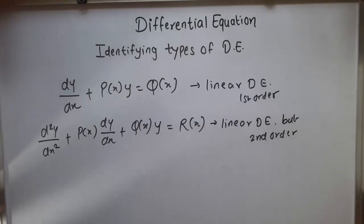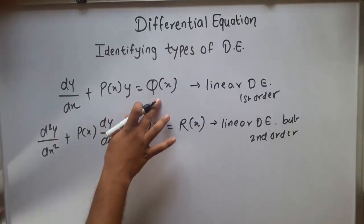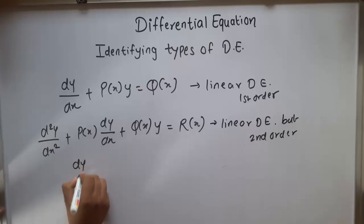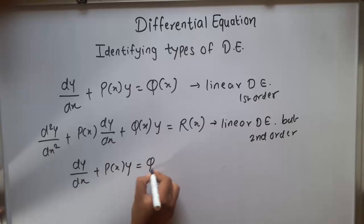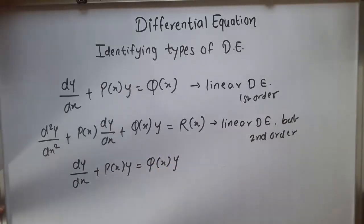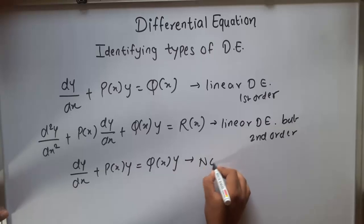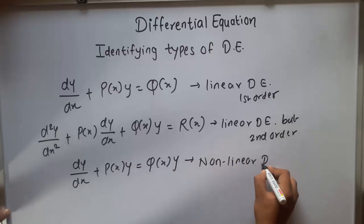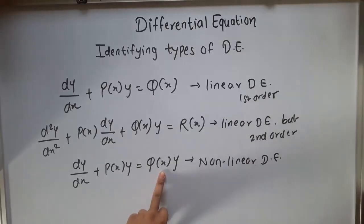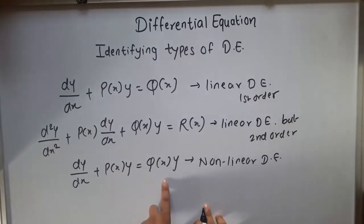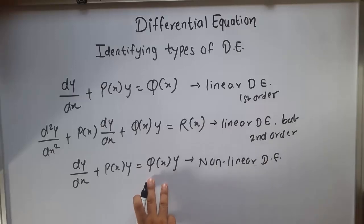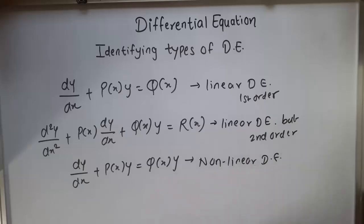If we multiply by a power of y, that forms dy/dx plus p(x)y equal to q(x)y^n. This equation is called a non-linear differential equation, and also called Bernoulli's differential equation. We have multiplication of y and x variables, so that is the non-linear differential equation. When we have the multiplication of two variables, it forms a non-linear (hyperbolic) relationship, which is why it is called non-linear.